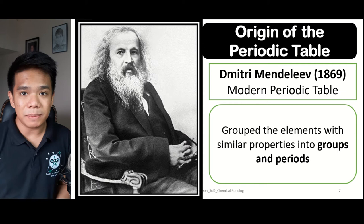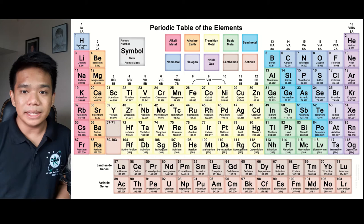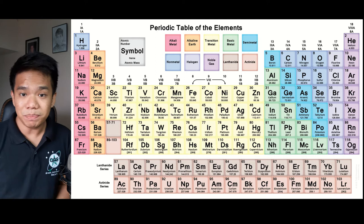As we all know, the modern periodic table that we have today is comprised of 118 elements, which are grouped depending on whether they are a metal or a non-metal. Within the modern periodic table, we can also see certain properties of the elements such as its atomic number, the atomic symbol together with its name, and its atomic mass.